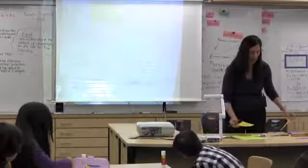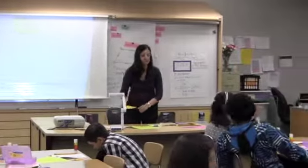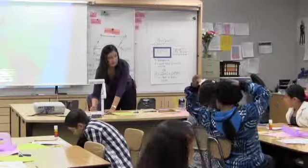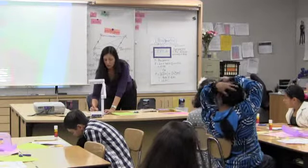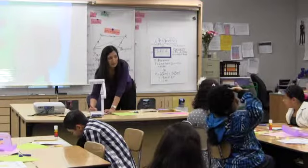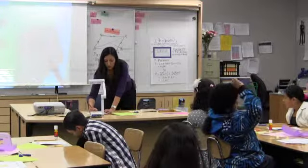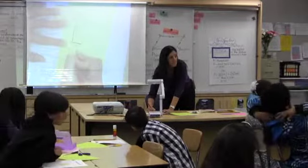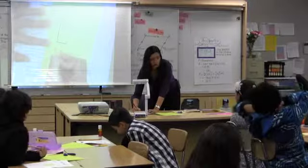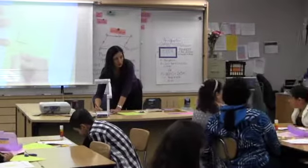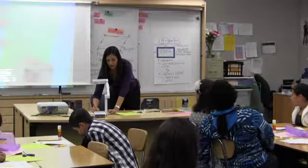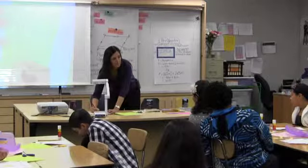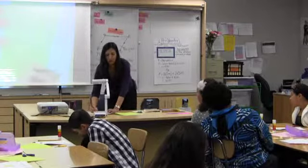What about D? Tatiana: My base was two centimeters and my height was six centimeters. Multiply the base, two centimeters, and the height, six centimeters, and your area was twelve square centimeters. Great.